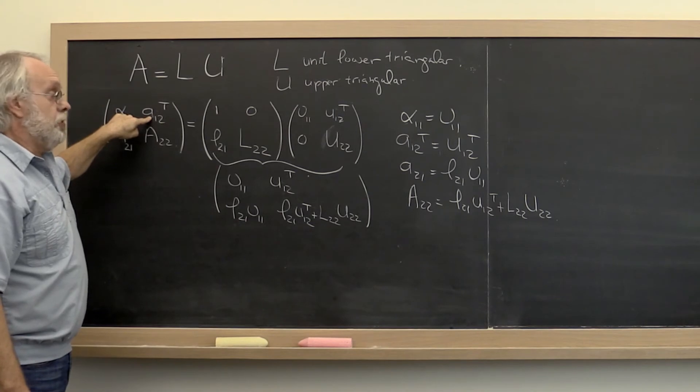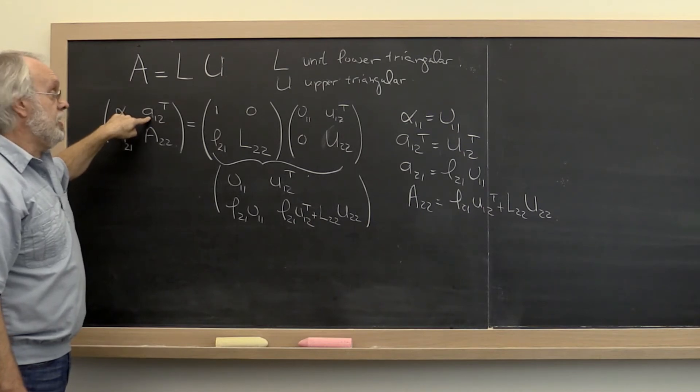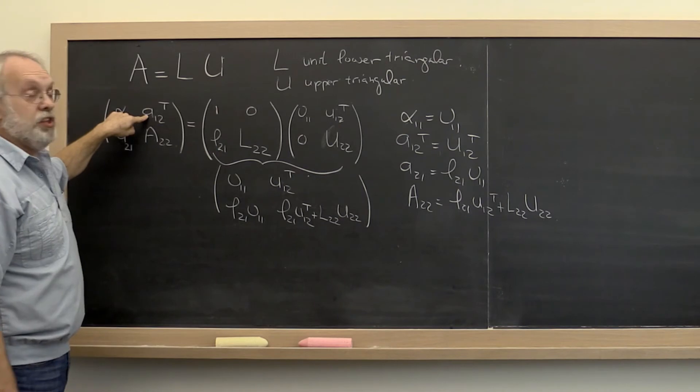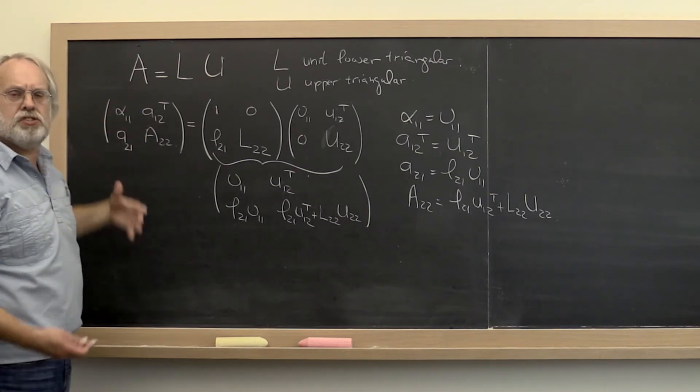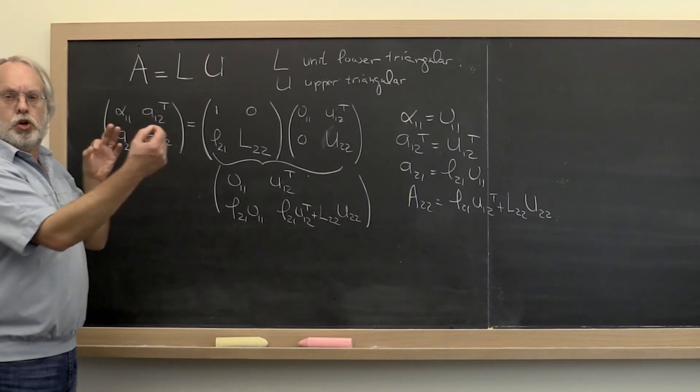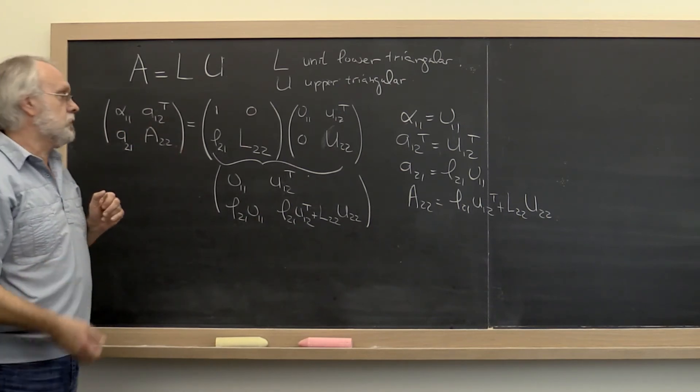Similarly, A 1 2 transpose is just equal to U 1 2 transpose. So to compute U 1 2 transpose and overwrite A 1 2 transpose with it, you don't need to do anything either. That's just like when you perform Gaussian elimination. The current row that you're working with you leave alone.